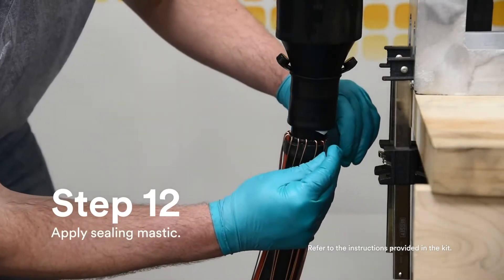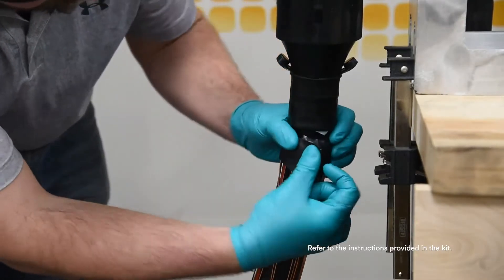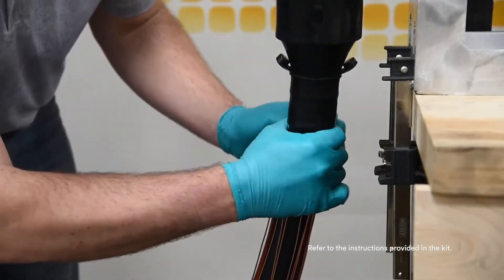Apply sealing mastic as close as possible to folded back jacket seal while maintaining complete overlap of previously applied jacket mastic.